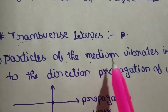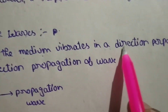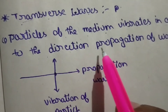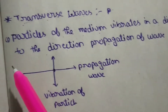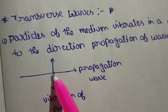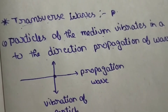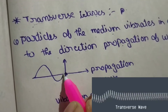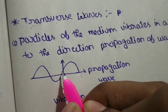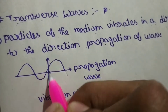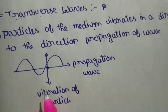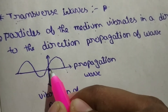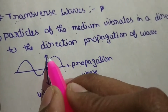Particles of the medium vibrate in a direction perpendicular to the direction of propagation of the wave. This is a particle — a particle is not a wave. Particles of the medium vibrate in a direction perpendicular to the direction of the wave.